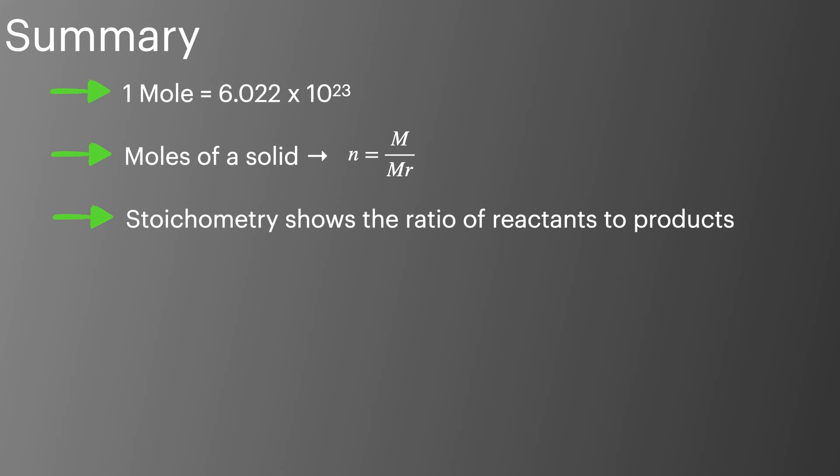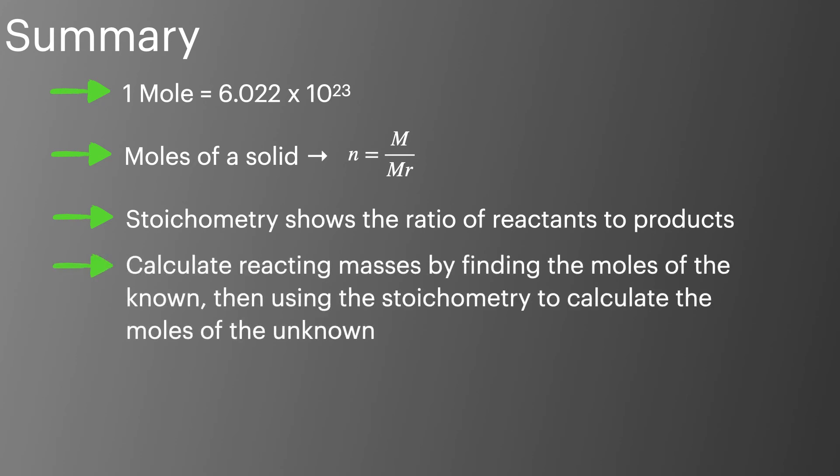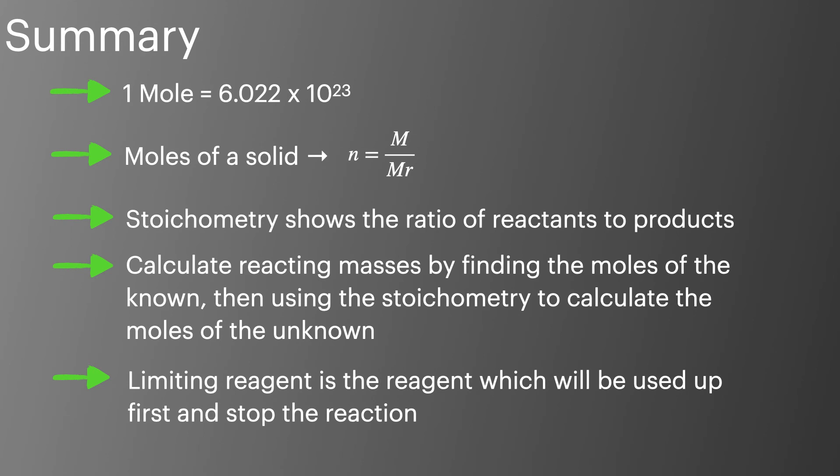Let's go ahead and summarize the episode on moles and masses. One mole is 6.022 times 10 to the 23 particles. The moles of a solid can be calculated using n equals m over Mr. The stoichiometry of a reaction shows the ratio of reactants to products. When it comes to calculating reacting masses, we start off by finding the moles of the known and then using the stoichiometry to calculate the moles of the unknown. And finally, the limiting reagent is the reagent which will be used up first and stop the chemical reaction.